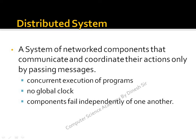A distributed system is one that has autonomous systems which communicate by passing messages across the globe. That is the definition of the distributed system. In the next slide, we will see there are two or three different types of distributed system definitions.